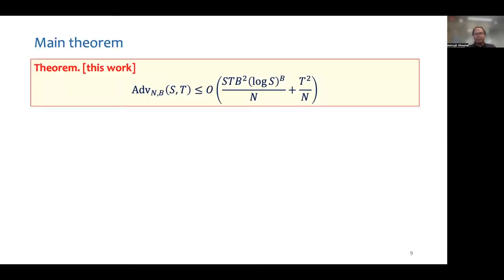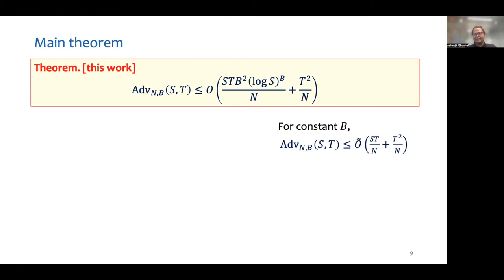This is the main theorem that we prove. We show that the maximum advantage of an st-adversary in finding a b-block collision is asymptotically upper bounded by st·b² · (log s)^b / n + t²/n. For constant values of b, this is asymptotically st/n + t²/n, ignoring polylog factors. This proves the STB conjecture for all constant values of b.